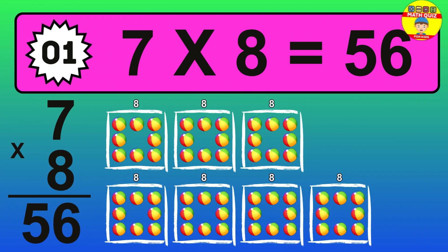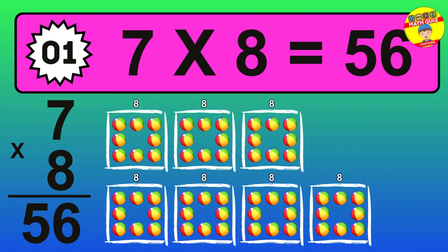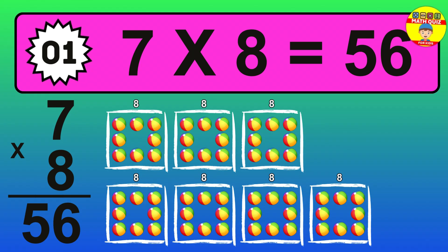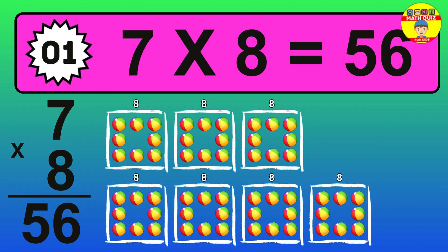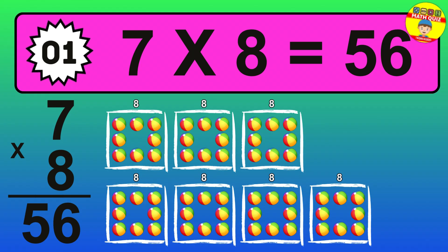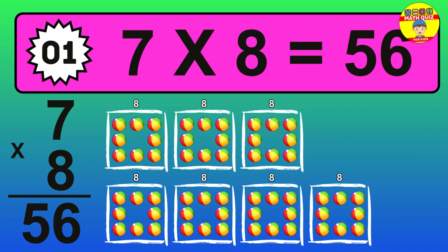The answer is 7 times 8 is 56. To calculate, we have 7 groups with 8 balls each one. So, how many balls do we have? 56 balls.